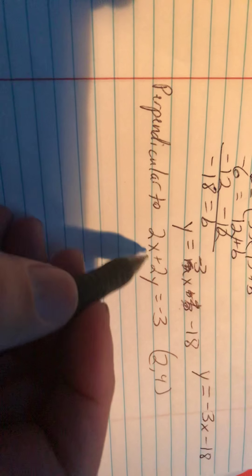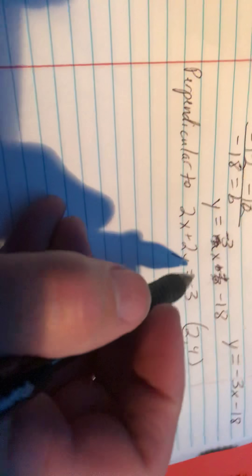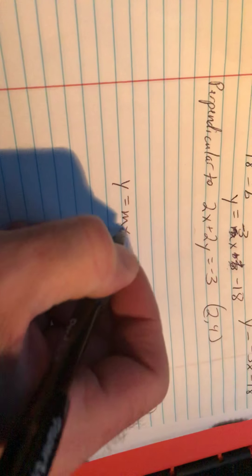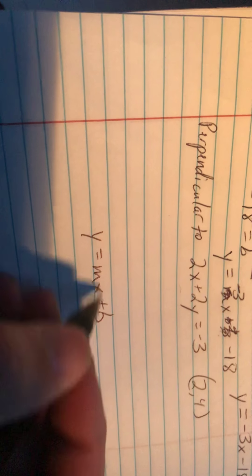Now we need to find the slope of the line that is perpendicular to this line. Now remember, in order to determine the slope of this line, we need to put it in slope-intercept form, which means we need to solve for y. So I'm going to go ahead and first write the final equation there that we're going to be plugging m and b into for our final answer.